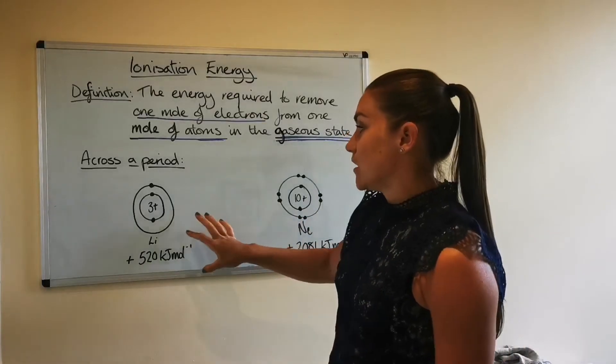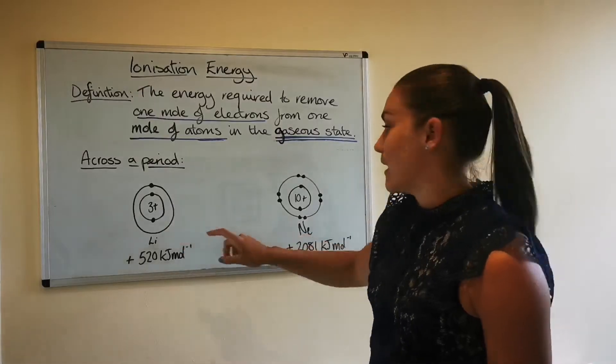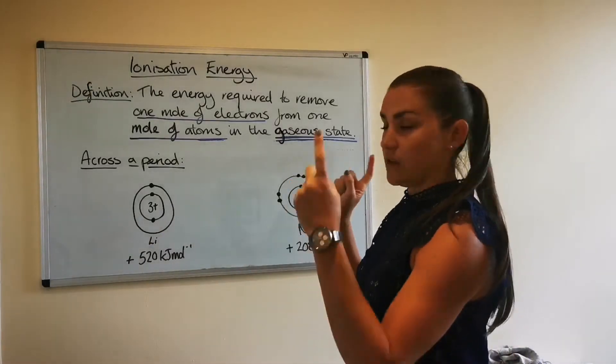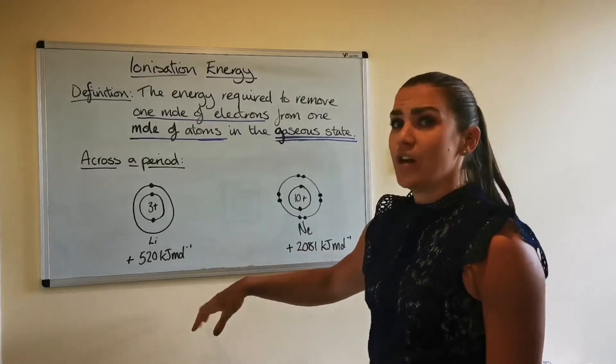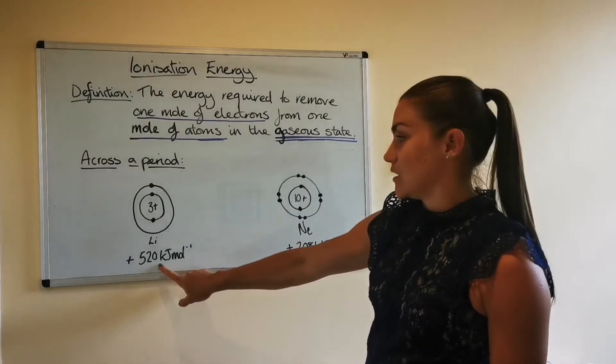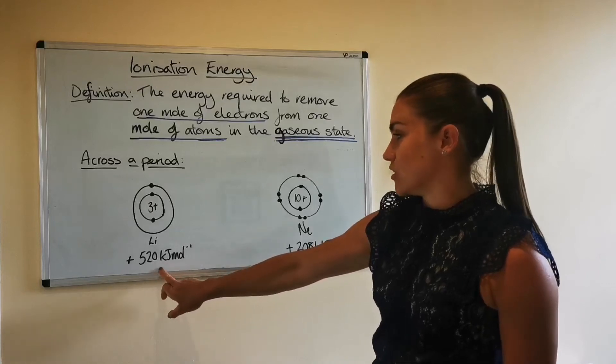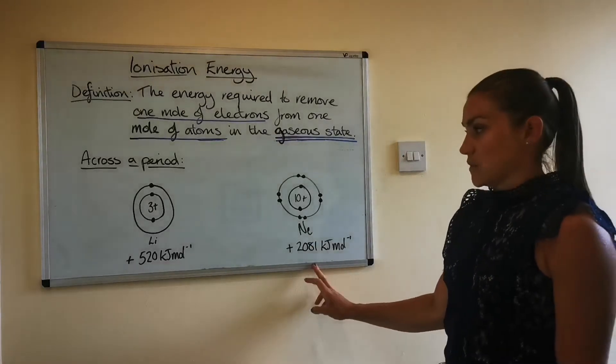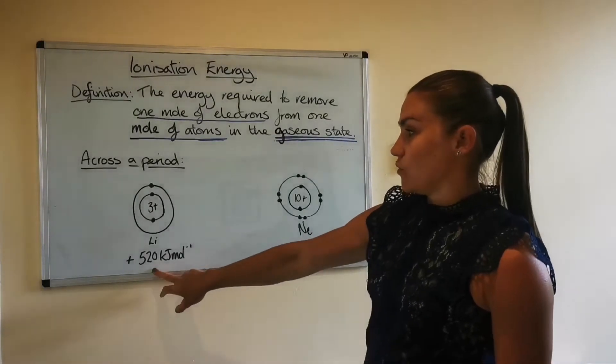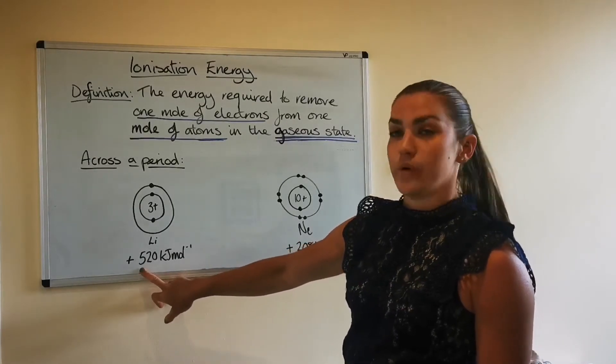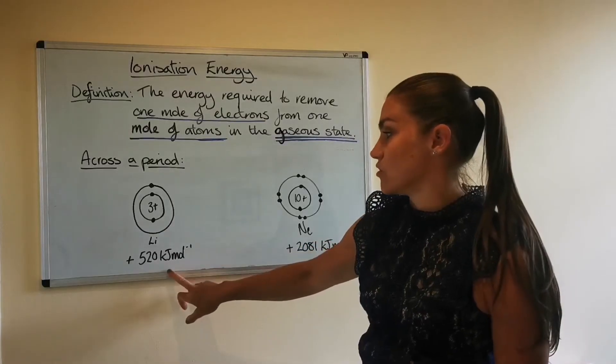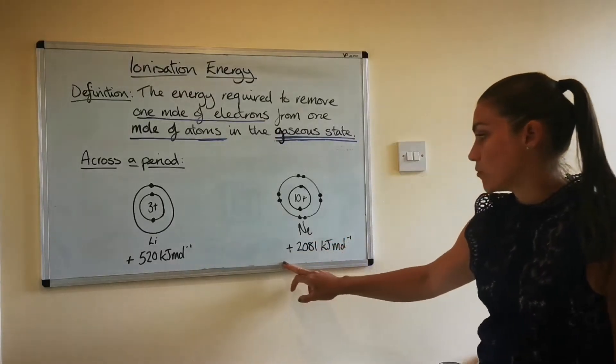So here I've got a lithium atom and a neon atom, so these are the two either side of the second period in the periodic table. And from the data book clip, I've taken the first ionization energies for both of these atoms. So if you wanted to remove one mole of electrons from one mole of lithium atoms, you would need to put in 520 kilojoules of energy per mole.